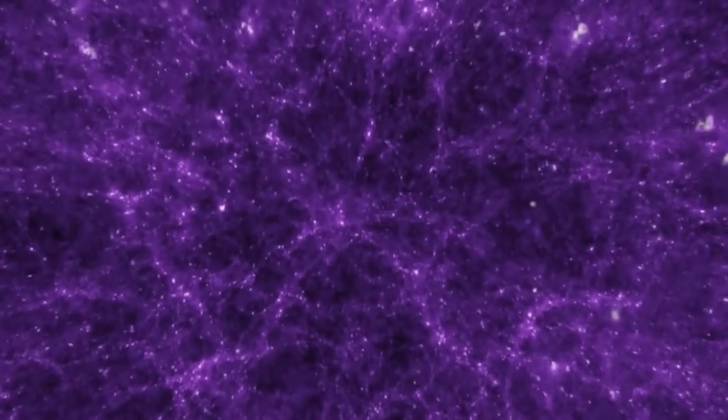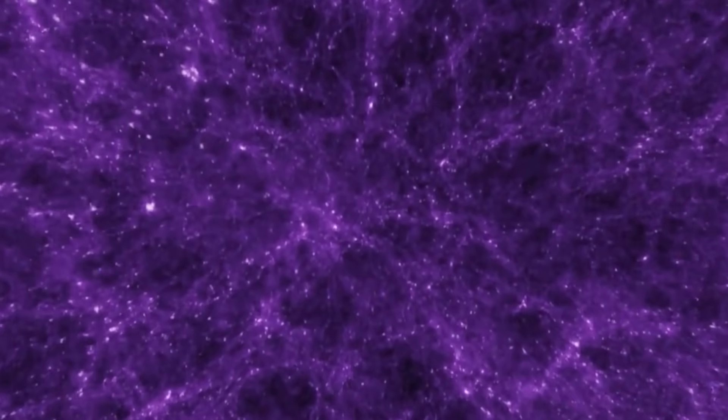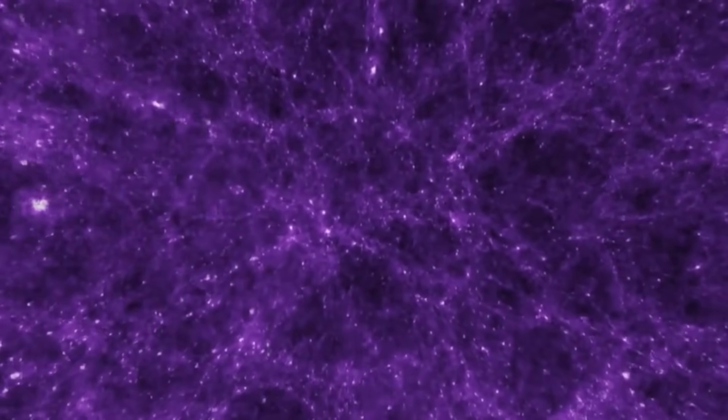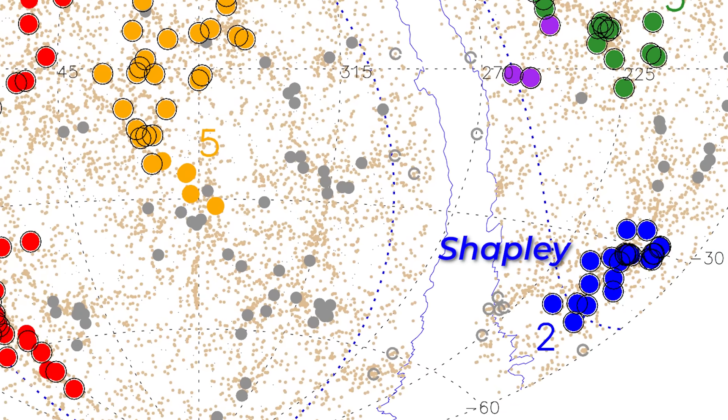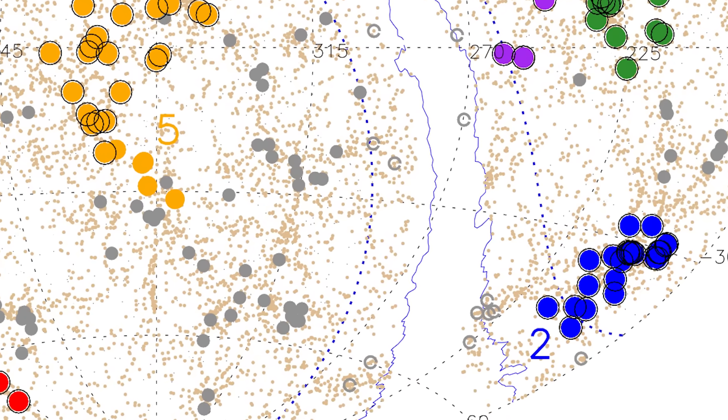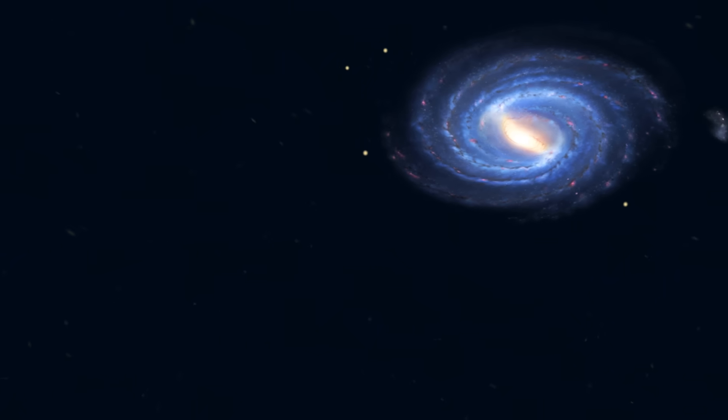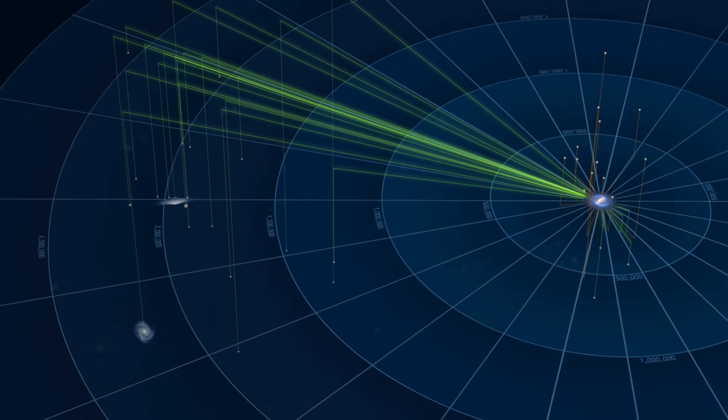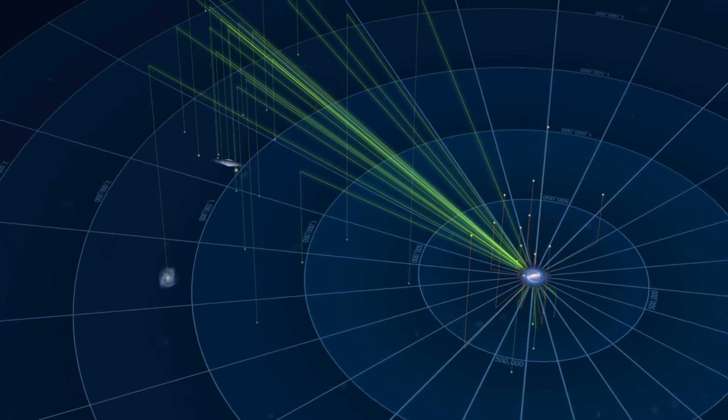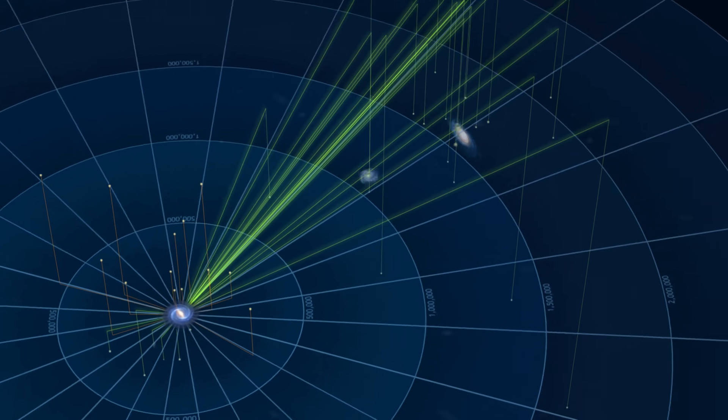Even though Quipu is the biggest superstructure in our part of the universe, it's not the one pulling on us the most. That role belongs to Shapley, which is the smallest of the five superstructures found, but also the most compact. It has so much mass packed into a small space that its gravity has a strong pull. Scientists believe Shapley is one of the main reasons why our own group of galaxies, the local group, is moving the way it is. So we're being gravitationally tugged more by Shapley than by Quipu.